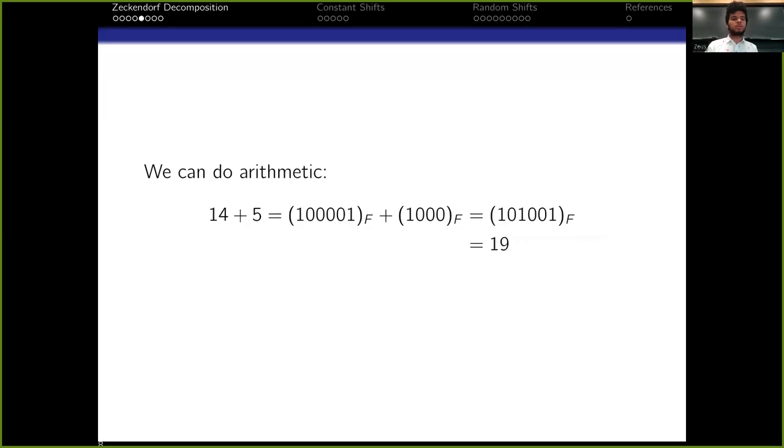All right, we can do arithmetic with 14 and 5, we can do arithmetic with the decompositions. So for example, 14 plus 5, we can add their strings coordinate by coordinate and get the decomposition of 19. Yay!